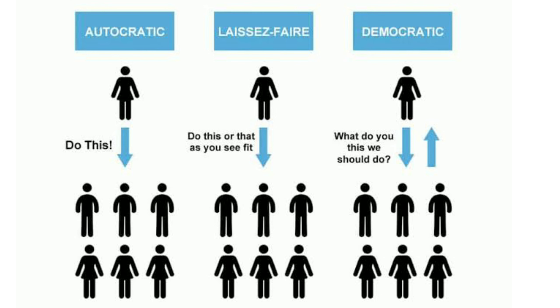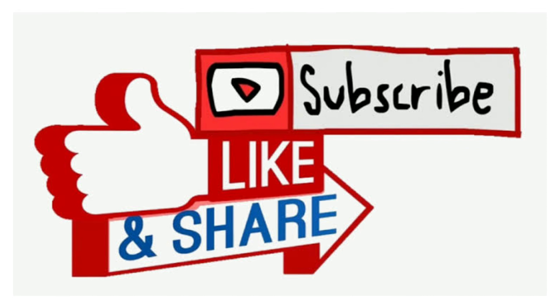In summary, autocratic leaders say 'do this,' laissez-faire leaders say 'do this or that as you see fit,' whereas democratic leaders allow a flow of decision-making in both directions. These are the major points from social group work. Tomorrow we can discuss previous year question papers. Thank you so much for watching — if you like it, please subscribe and share.